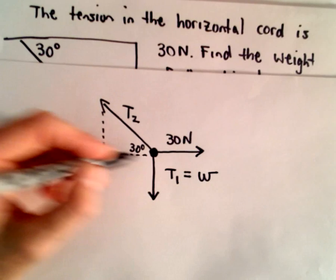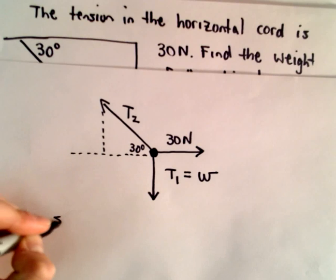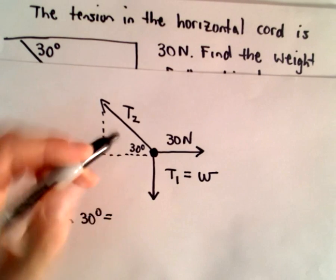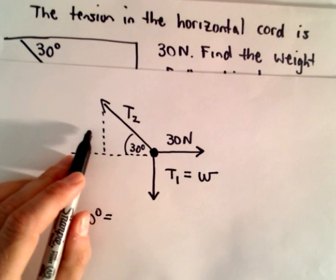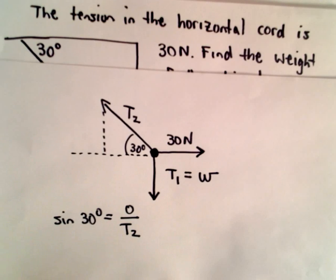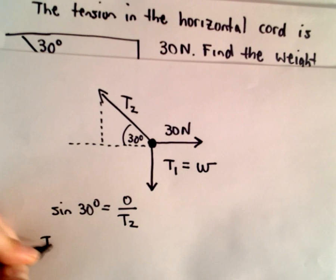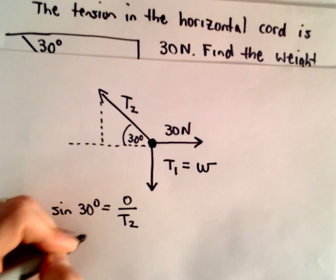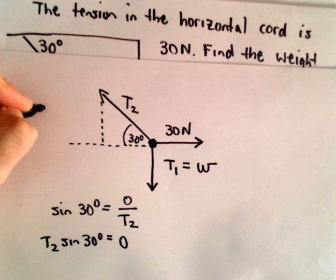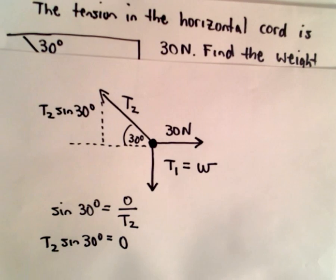So to break it down into its horizontal and vertical components, we're just using sine and cosine. So just to refresh you real quick, sine of 30 degrees, that's the ratio of the opposite side to the hypotenuse. The hypotenuse has some tension, we're calling it T2. So the opposite side will be T2 times sine of 30 degrees. That's going to be the vertical component, so T2 times sine of 30 degrees.